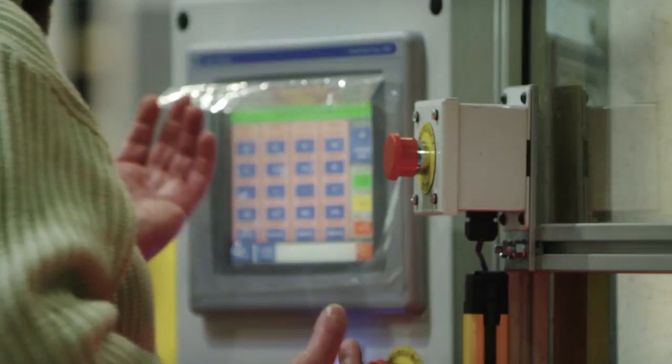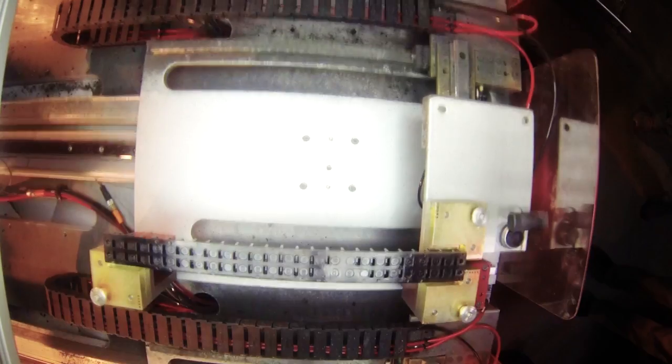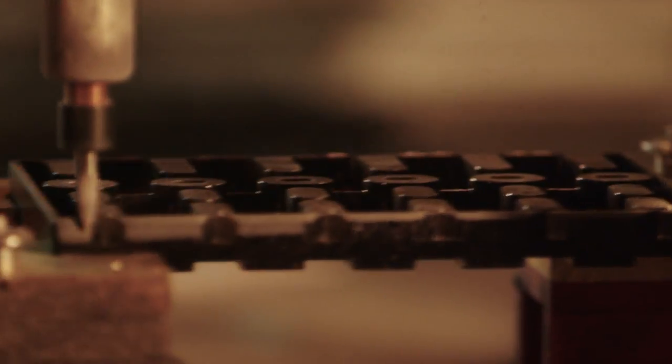The operator places plastic parts into the fixtures, he activates a button, a camera comes over, verifies which part it is, it slides into the cell and then the robot deflashes it.